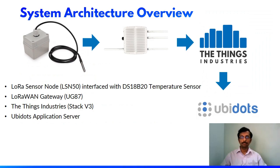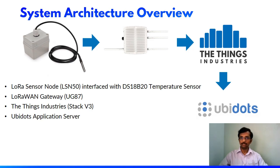Today we are going to see the LoRaWAN sensor node LSN50. This LSN50 is very much suitable for all LoRaWAN compliant applications. As we all know, LoRaWAN is a technology where we can transmit data over longer distances with low power and highly secure communication. This particular LSN50 is very much suitable for all these cases, and in this entire session we are going to see how data can be transferred from this LoRaWAN sensor node to the end application server.